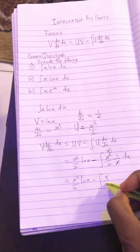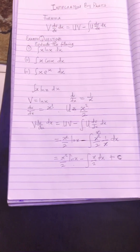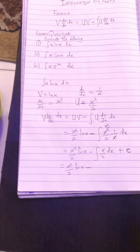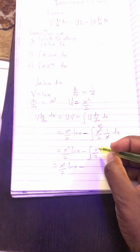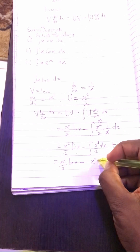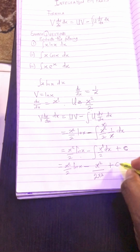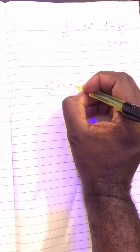So we now have: x²/2 · ln x − ∫(x/2) dx. Integrating x/2: add 1 to the power of x (which is 1), giving x², then divide by the new power 2, and bring down the existing 2 to get x²/4. Always remember to add the constant of integration. The final answer is: x²/2 · ln x − x²/4 + C. I'll solve the next question in the next video — let me know what you think!